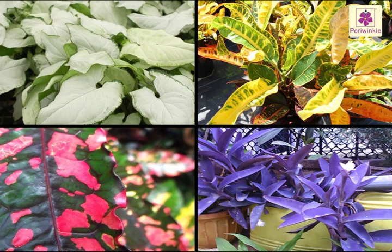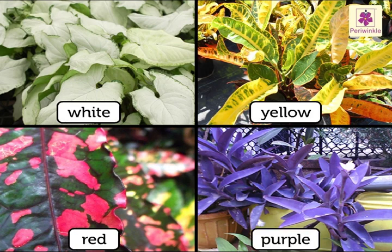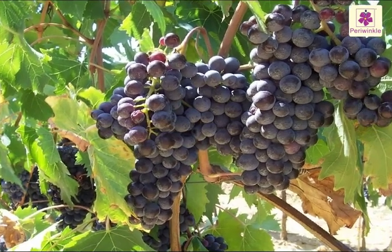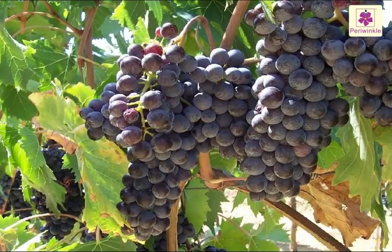Not all leaves are green. Some crotons have white, yellow, red or purple leaves. However, food is only made in the green areas of the leaf.